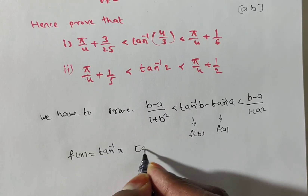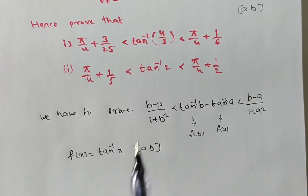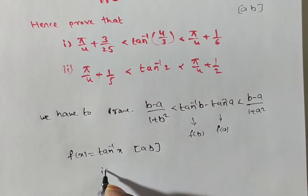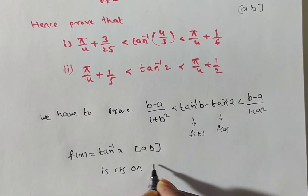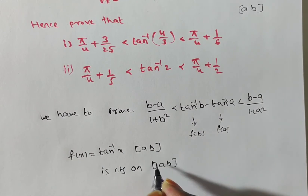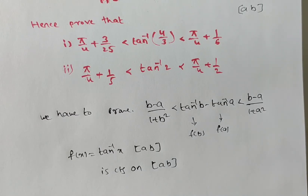The interval is [a, b]. We check whether the given inequality satisfies Lagrange's mean value theorem conditions. Tan inverse x is continuous on the closed interval [a, b] — note that tan x is not continuous everywhere, but tan inverse x is continuous and defined on the given interval [a, b].